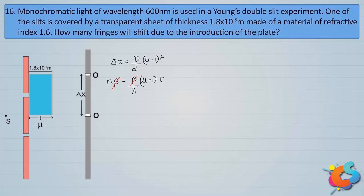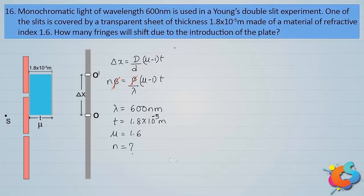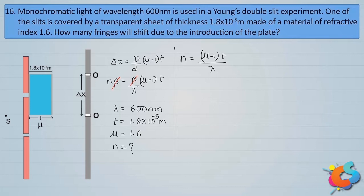The given data: wavelength of light λ = 600 nanometers, thickness of the plate t = 1.8×10⁻⁵ meters, and refractive index μ = 1.6. To calculate n, we use the formula: n = (μ−1)×t / λ. Students can use this formula directly to find the shift in terms of number of fringes.